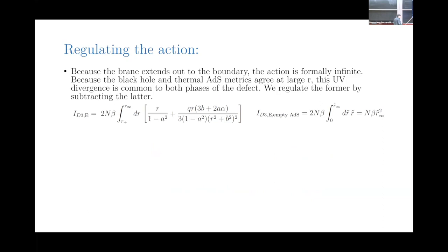Because the brane is sent out to the boundary, we have a formally infinite action. But also the brane in even an empty AdS thermal background needs to be regulated. The regularization we'll use is to subtract the brane action in the black hole background from the brane action in the thermal AdS background. The justification for this is that at large enough radial coordinates the two metrics will agree — it's essentially the UV divergence that's common to both phases of the defect. This is a version of holographic renormalization, a holographic subtraction.